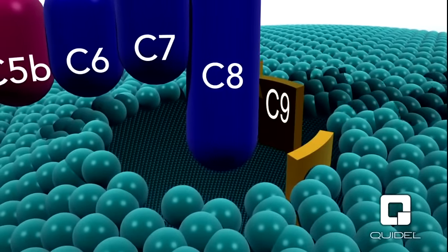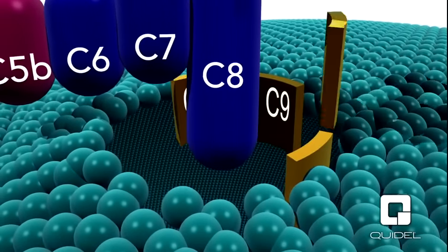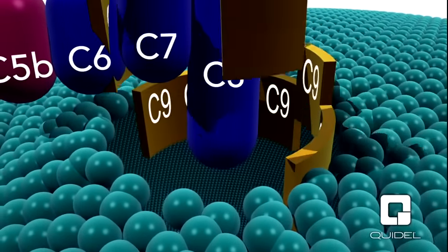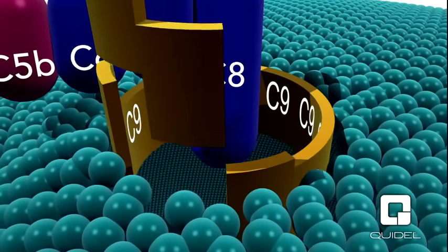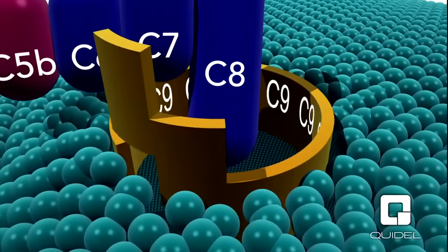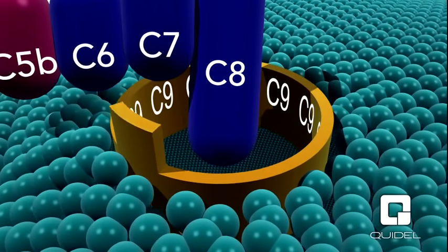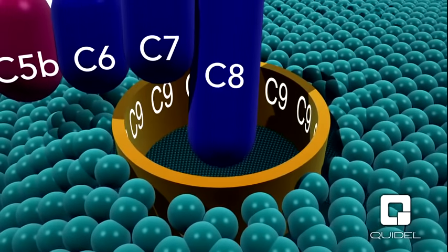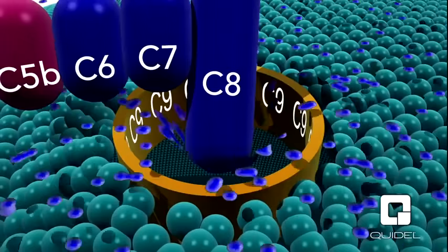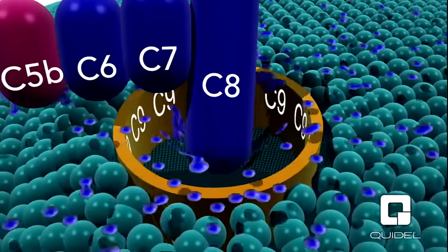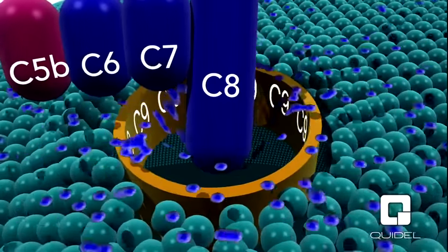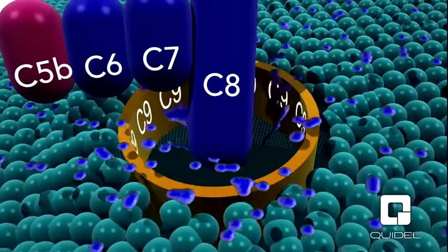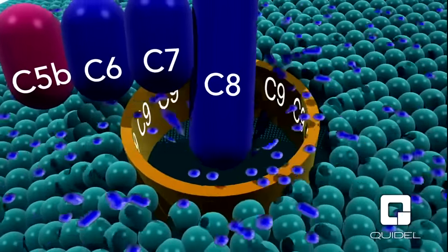Subsequently, C9 binds to C8, and this is followed by the binding of many additional C9 molecules, leading to the formation of a large pore in the cell membrane. The pore is large enough to allow water, ions, and small molecules to enter the cell, leading to lysis.